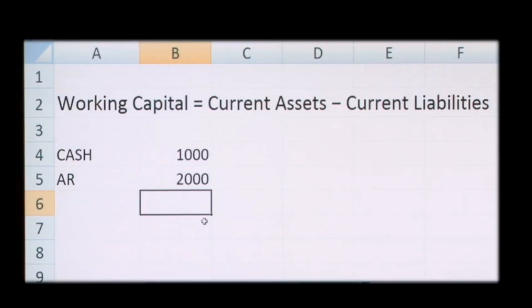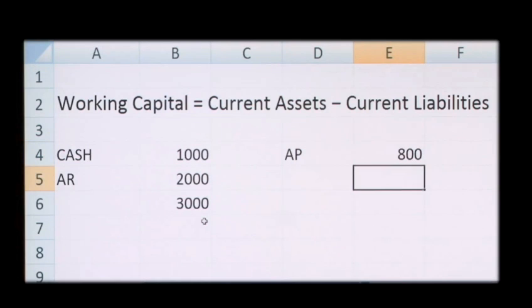Now if we look at your current liabilities, if your accounts payable is eight hundred pounds and you have an overdraft of one thousand pounds, then we have current liabilities of eighteen hundred pounds.